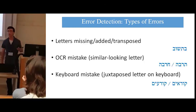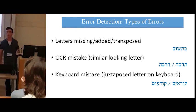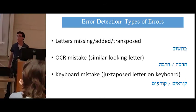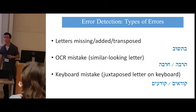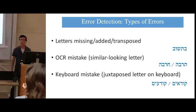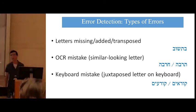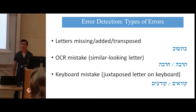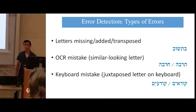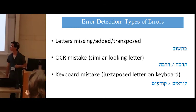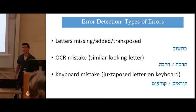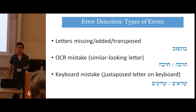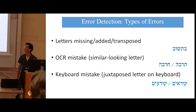We found multiple types of errors that occur in these texts. For example, letters that are missing, added, or transposed. Or visual mistakes, where similar-looking letters get switched — for example, chet and taf, or kof and bet. Also, keyboard mistakes, where two letters that are near each other on the keyboard get switched — for example, aleph and lamed.